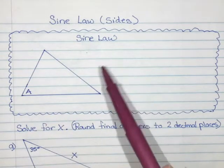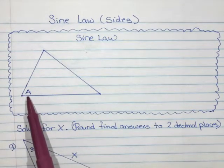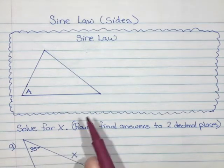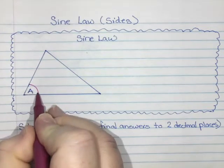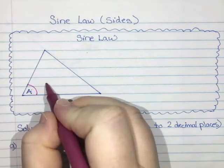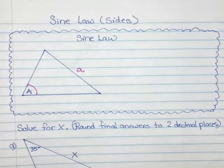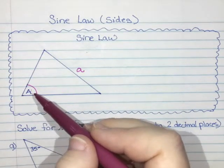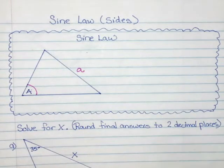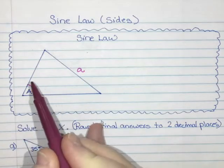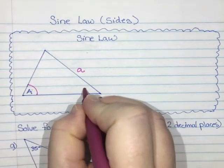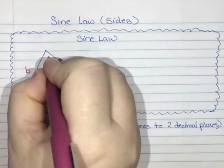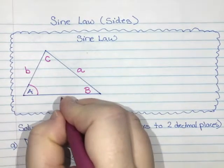The way we label our sides and angles is we use capital letters for the angles in the corners, and lowercase letters for the opposite sides. This triangle has angle A, and across from angle A we have side a with lowercase. Lowercases are always sides, uppercase letters are always angles. I'll call this one B with opposite side b, and angle C with side c.